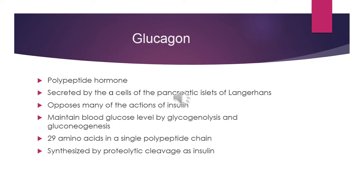Students, now we are going to discuss another hormone which is important for the regulation of metabolism, and that is glucagon. Last slide we studied insulin — its metabolic effects, structure, synthesis, and metabolic effects. Similarly, we will discuss glucagon: its structure, synthesis, and metabolic effects on different types of metabolism — carbohydrates, lipids, and protein.